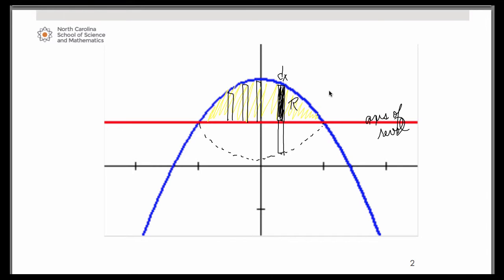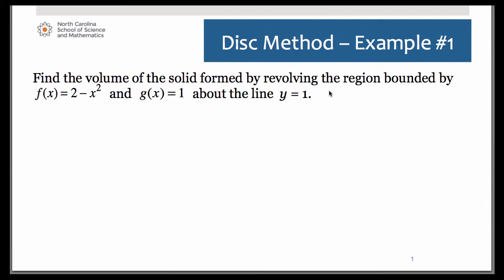Since it's a dx problem, our expression does have to be in terms of x. So let's go ahead and set that up. At the top, the rectangle is hitting the parabola. At the bottom, it's hitting that line y equals 1. So we can simplify that to get 1 minus x squared.